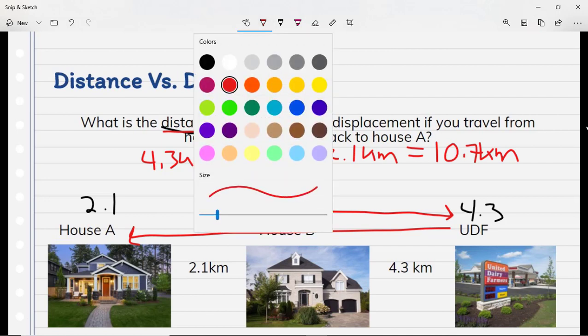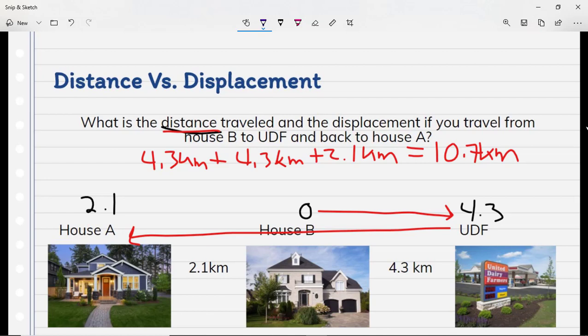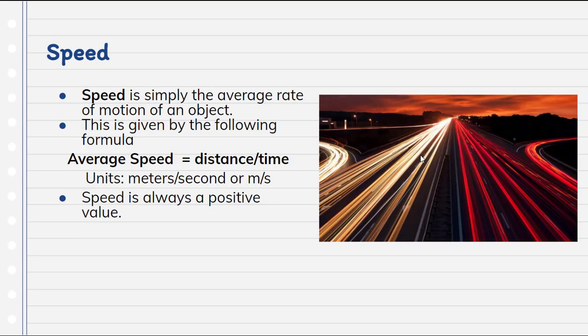Displacement is just the change from where you start to where you finish. I started at house B and finished at house A, so the displacement is just the distance between those two points. Because we are going backwards from our frame of reference, the displacement is negative 2.1 kilometers. Remember, forward is to the right and backward is to the left on our coordinate reference — just like on a Cartesian plane.